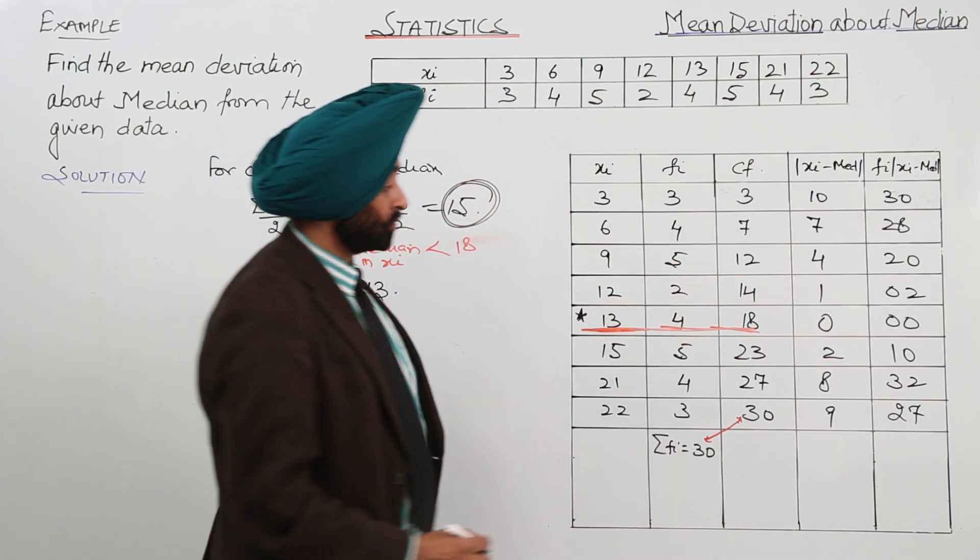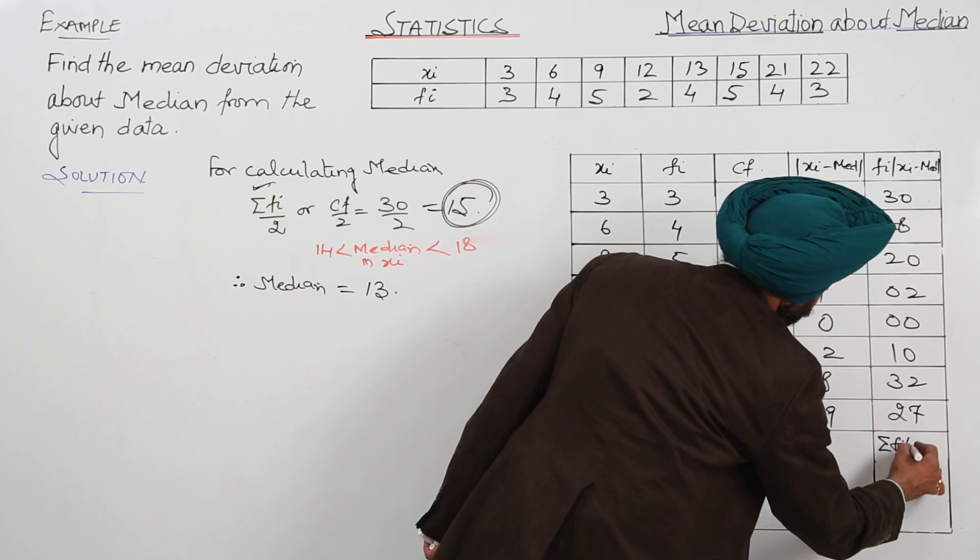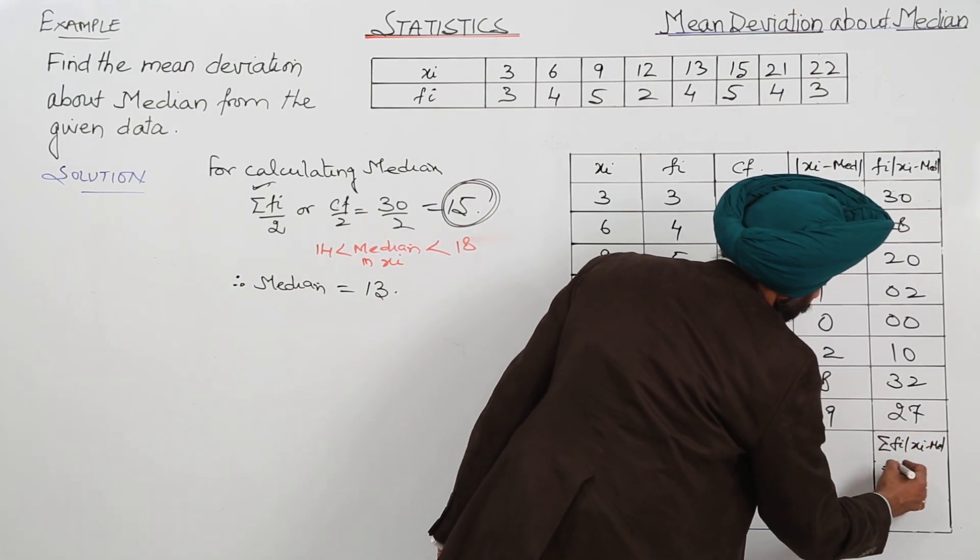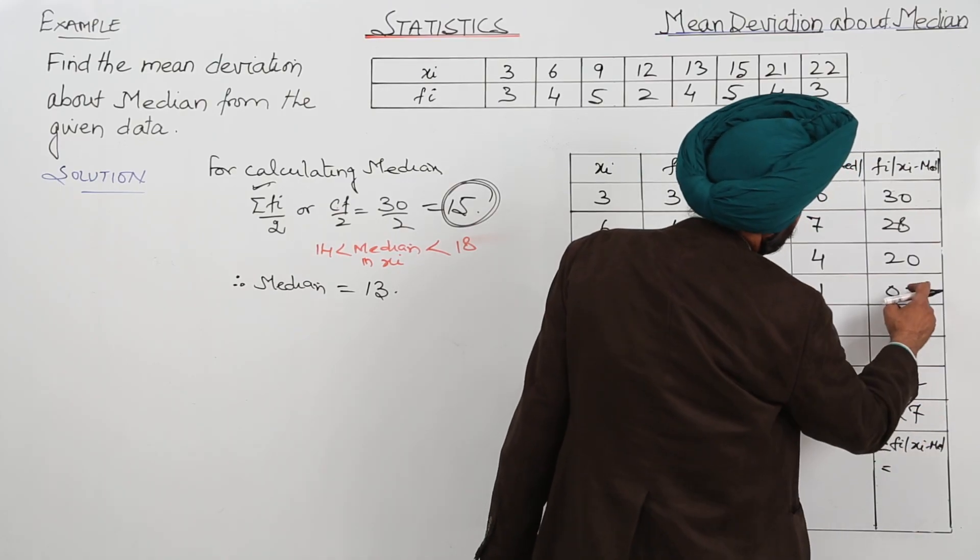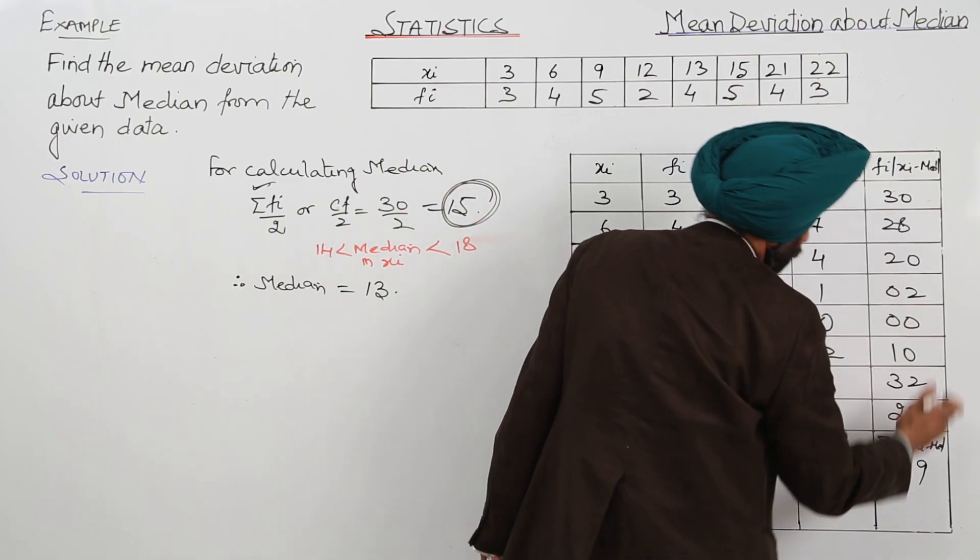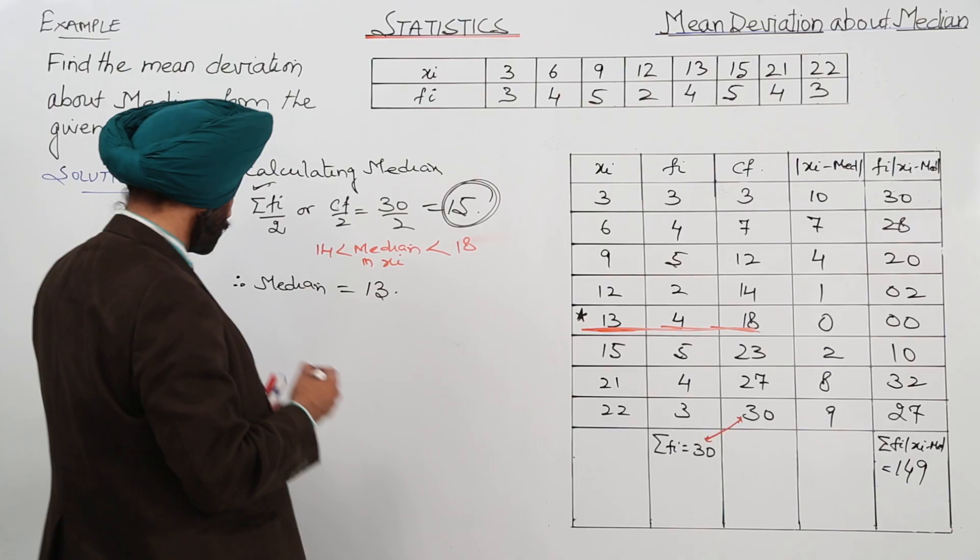So, summation for Fi, Xi minus median. This will be now. 7 and 2, 9, 11 and 8, 19. 149.